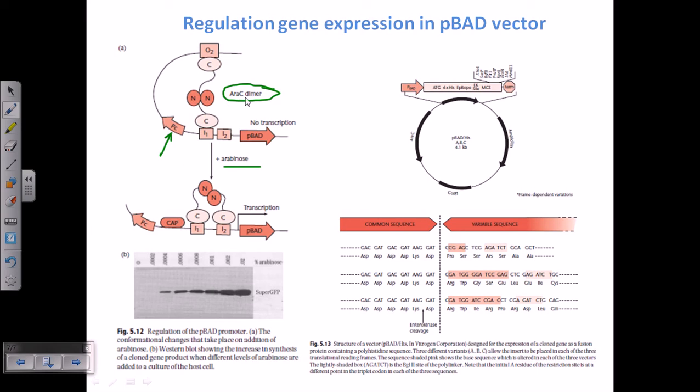But when we add Arabinose, adding Arabinose is dramatically forcing this dimer of AraC to be modified. So the conformation is changed for the AraC dimer in such a way. It was previously bound with I1 and O2.